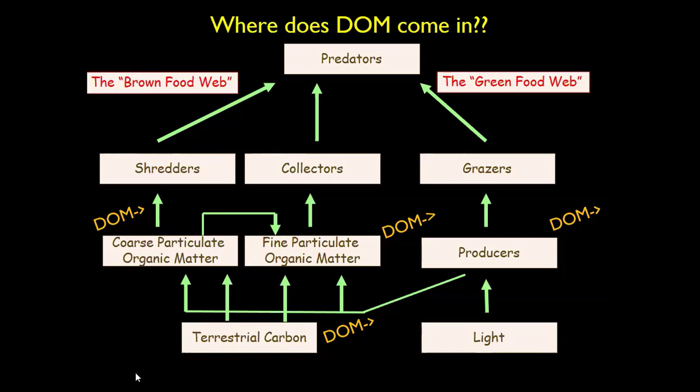Even the allochthonous stuff, but even the producers — even the algae, the periphyton — that's going to be leaching out dissolved organic matter. So it's entering our ecosystem from all sorts of different ways. A lot of it gets absorbed onto clay particles — that can be a big chunk of it. But how does it find its way into the food web? Through microorganisms.